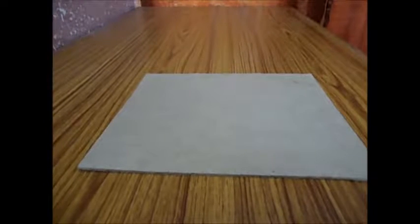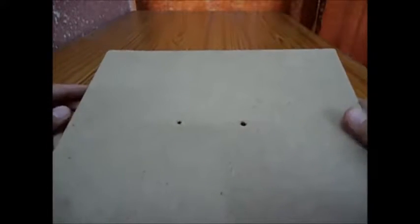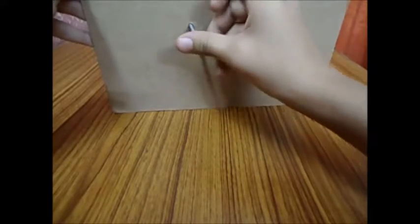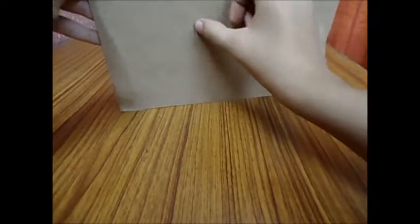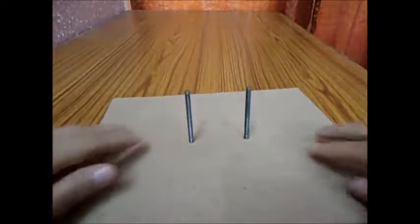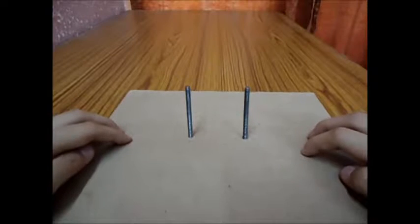First, take a thin cardboard and close two holes in it. The distance between the two holes should be around three to five centimeters. Now put the screws inside the holes like this. There goes one and there goes the other. So the base of the apparatus is made.